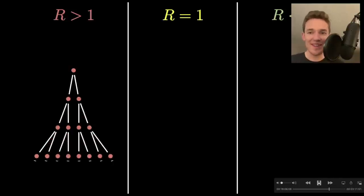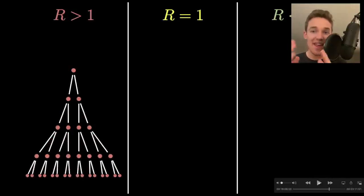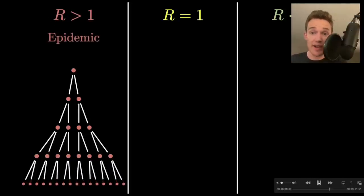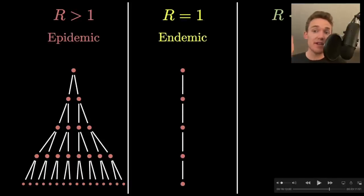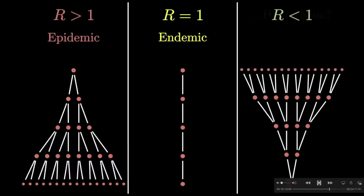R is a nice intuitive number: if R is greater than one, things are growing exponentially — that's when we call it an epidemic. A disease is called endemic if R is around one, meaning each infectious person infects only one other, so the total number infected doesn't really grow. If R is less than one, things are on their way out. I don't think there's actually a word for this, but half-jokingly, I thought we should call it a hypodemic disease when the reproductive rate is measurably below one.